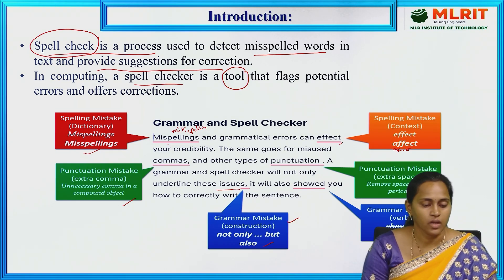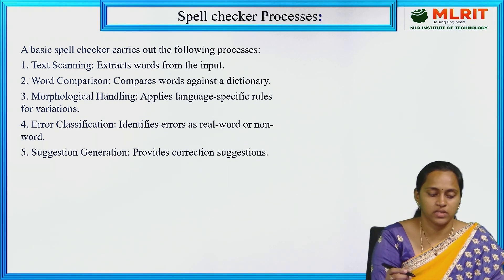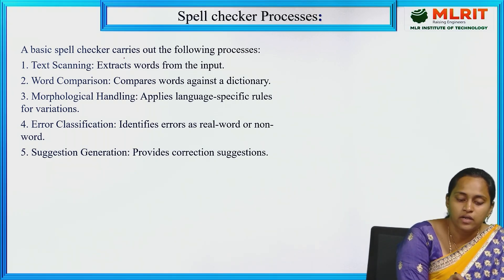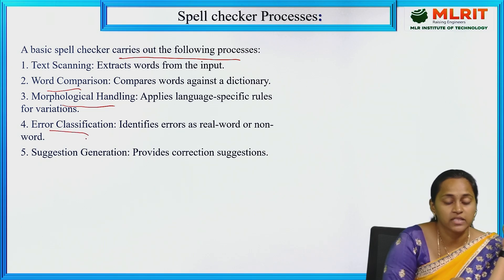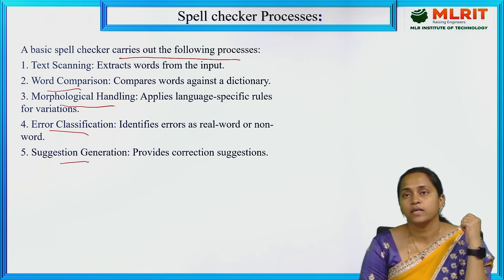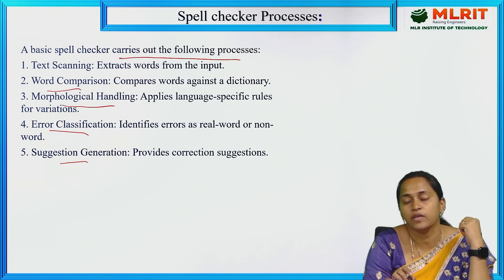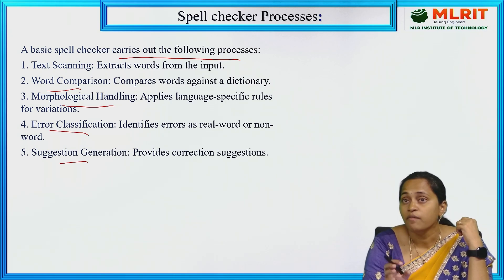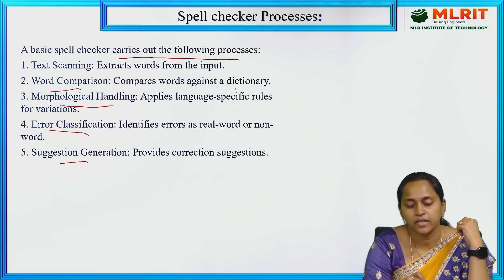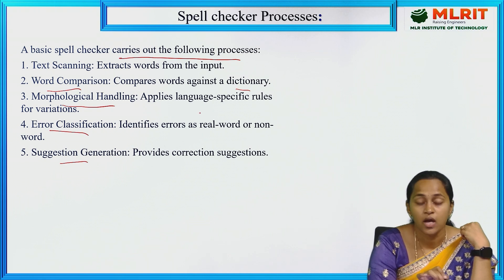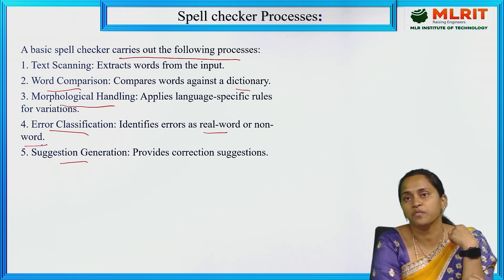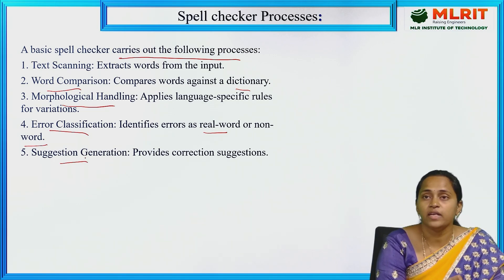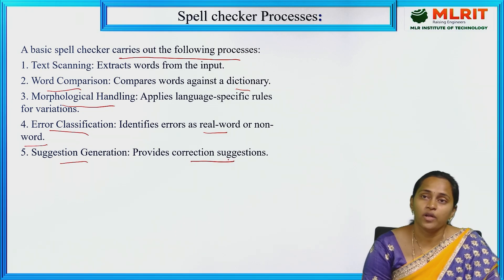Next, how does the spell checking process work? A basic spell checker carries out the following steps: text scanning, word comparison, morphological handling, error classification, and suggestions. First, it scans the text; then compares words with a dictionary; next applies morphological rules; then classifies errors as real-world or non-real-world errors; and finally provides correction suggestions.